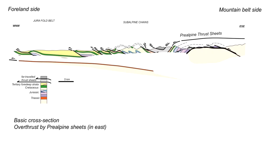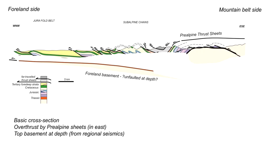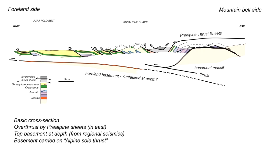The eastern part of the cross-section formed as a buried thrust system, whereas on the foreland side towards the Jura, the thrusts climbed out into the foreland basin and were presumably emergent. A major constraint on the cross-section is the top of basement underlying the Jura and subalpine chains, imaged seismically, which shows the foreland basement continuing to depth in an unfaulted state. The basement rocks on the right-hand side represent crests of a basin massif carried up on a thrust in the subsurface — termed the alpine sole thrust in regional studies.